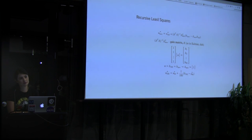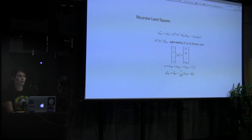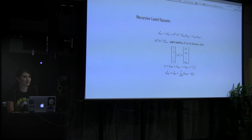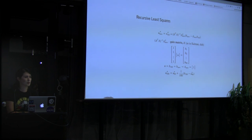Q: Looking at the equation at the bottom, it looks basically like an exponential moving average — you're removing high-frequency components and keeping low-frequency components, which is by definition a low-pass filter. Is it fair to say that? A: I wouldn't classify this as a low-pass or high-pass filter, because I don't know the distribution of my noise — I don't really know if my noise is high frequency or not. So I'm not sure.